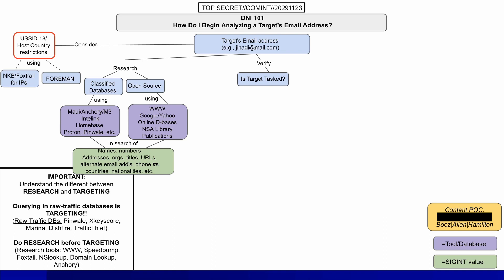If yes, what kind of tasking is already in place? Is it near real-time tipping, which is typical in CT — counter-terrorism — targets? In this case, information would be in the NSA systems mentioned here. Near real-time tipping is when selectors are checked against all incoming data, and if there is a match, analysts are immediately notified — for example, a new email, a new phone call, a new social media post, etc.